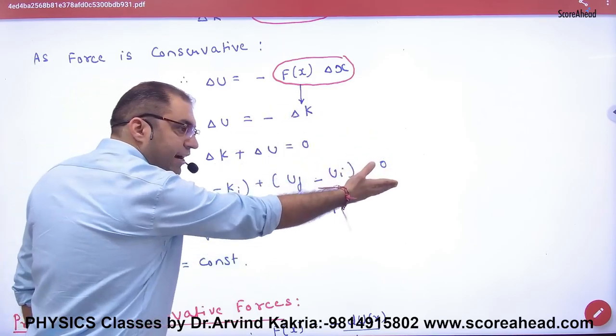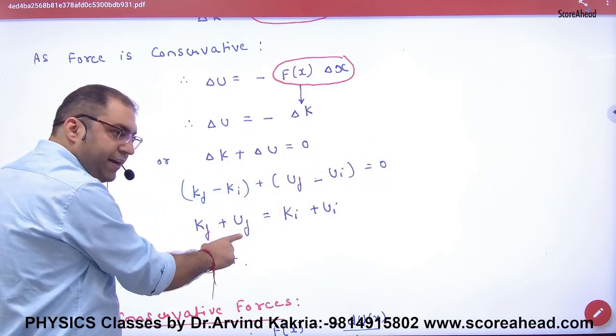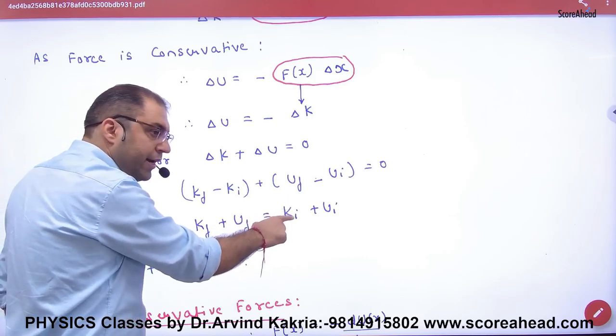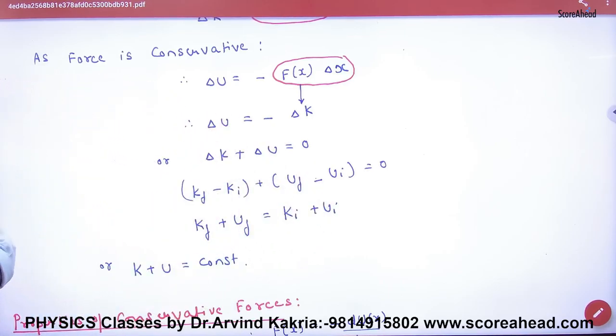Initial-initial terms, right? So final kinetic plus final potential equals initial kinetic plus initial potential. Sum of energy - kinetic and potential.